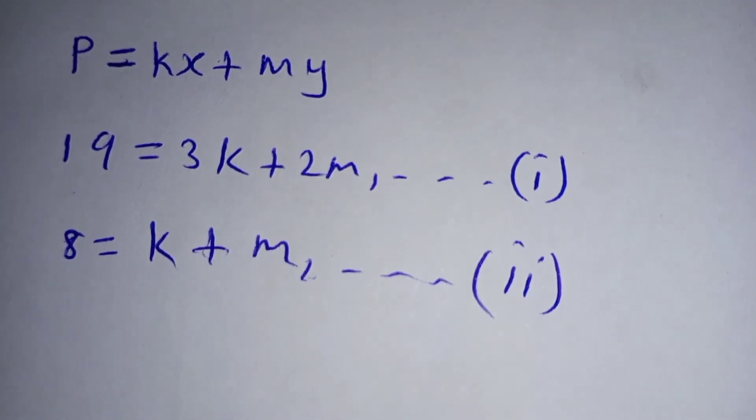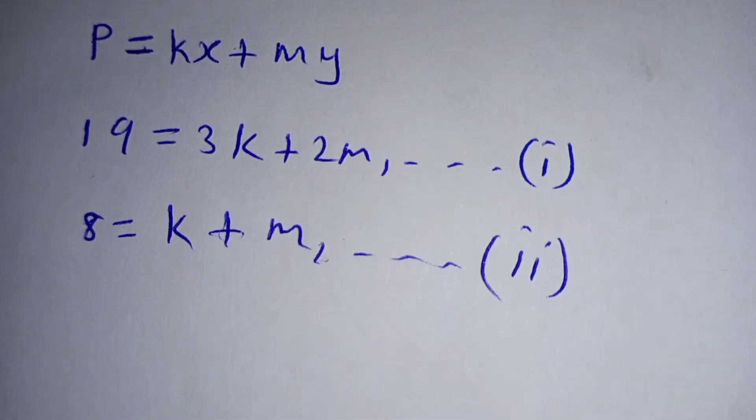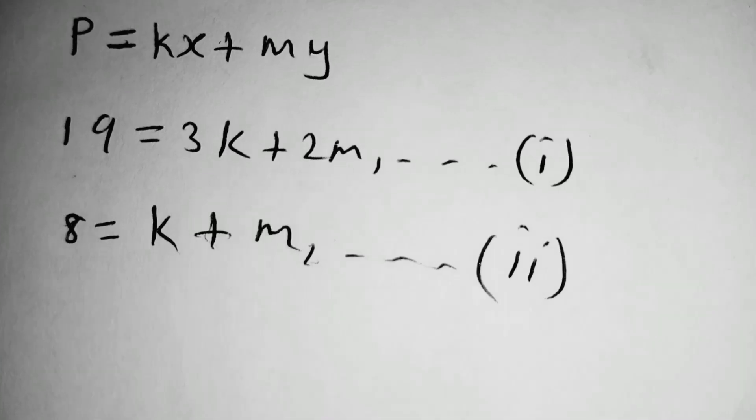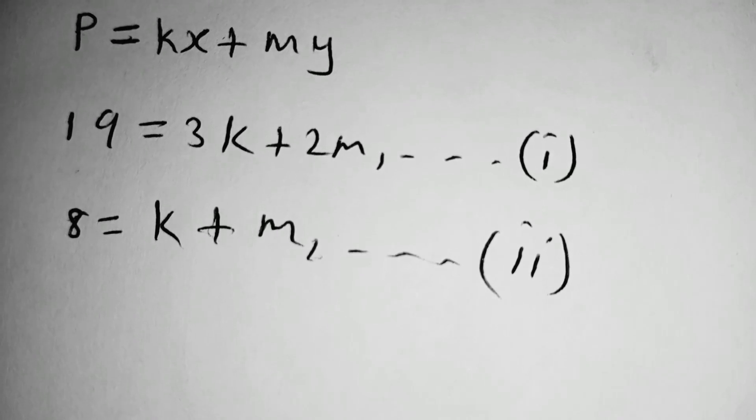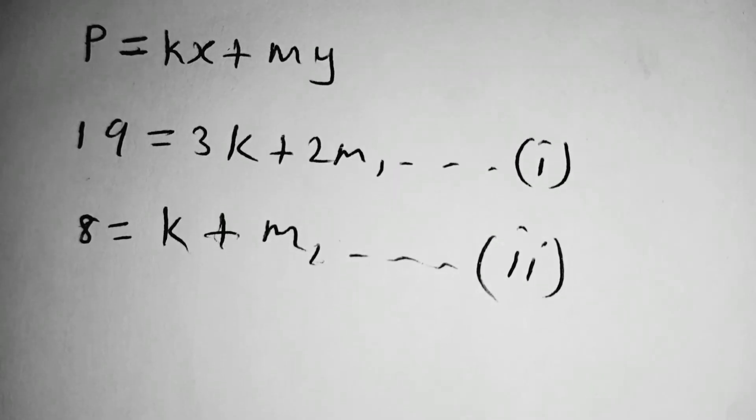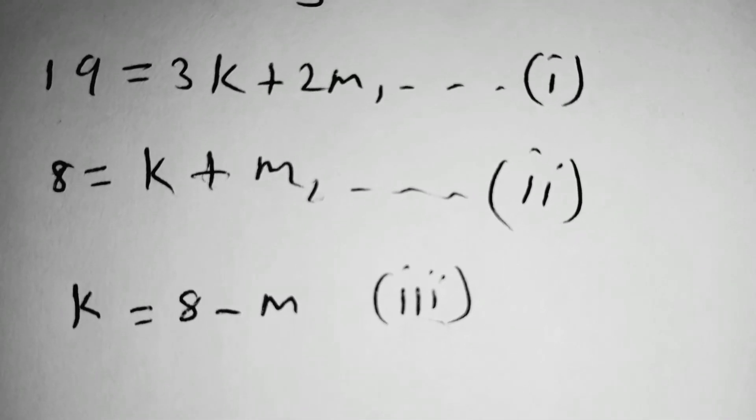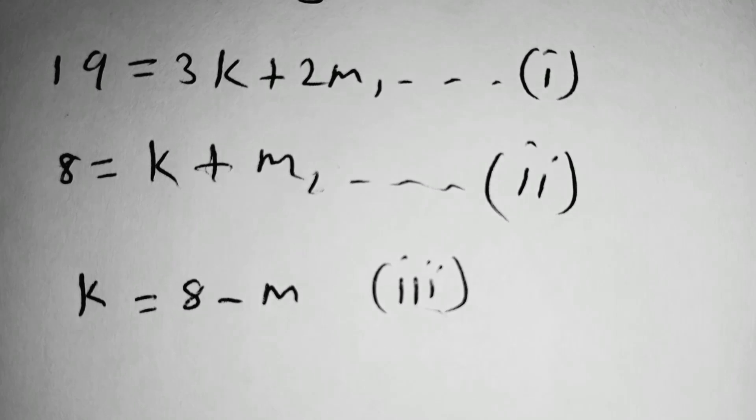When we look at equation 1 and 2, they are simultaneous equations which we are going to solve. So, from equation 2, making K the subject of the formula, K will be equal to 8 minus M. We substitute equation 3 in equation 1.